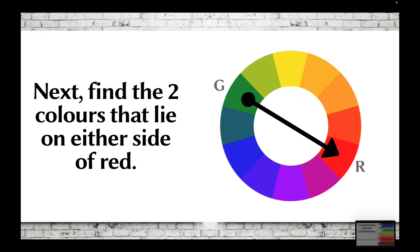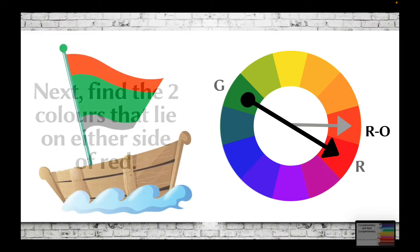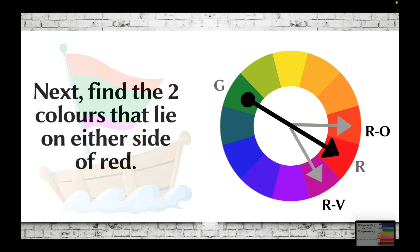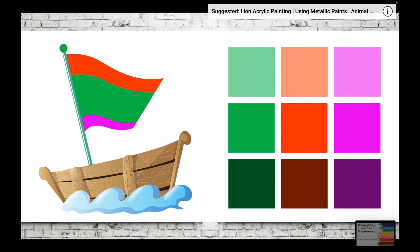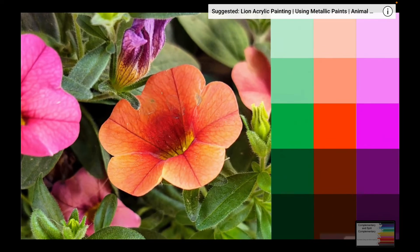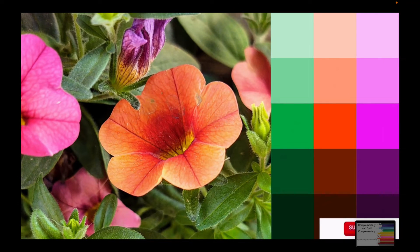Next, I would have to find the two colors that lie on either side of red. Red orange lies to the right of red, and red violet lies to the left of the color red. Green, red orange, and red violet is an example of a split complementary color scheme.